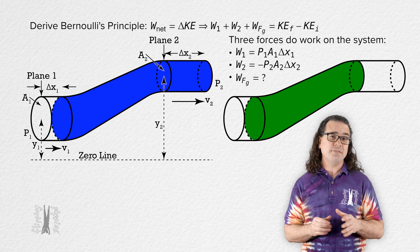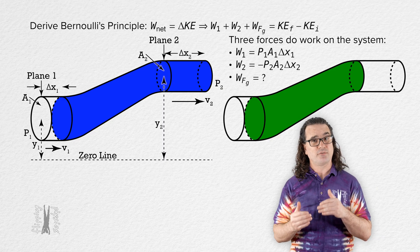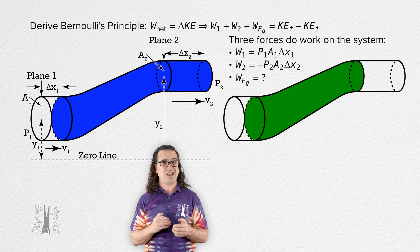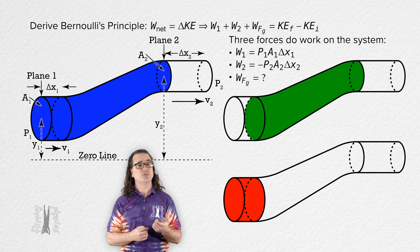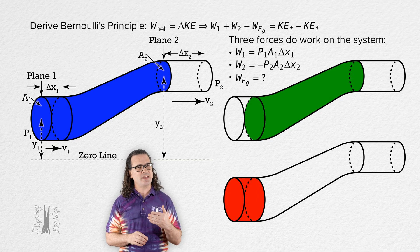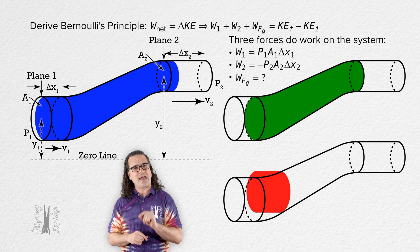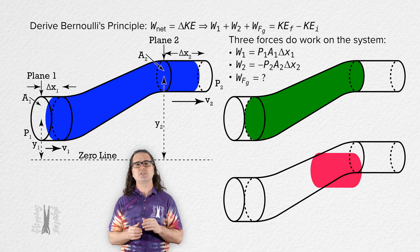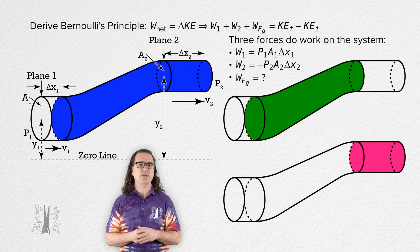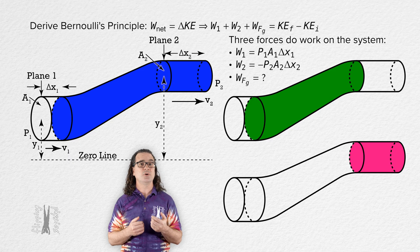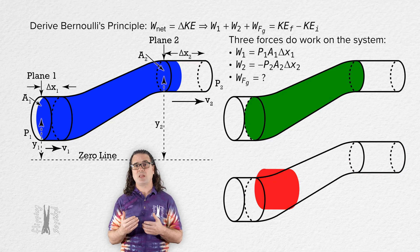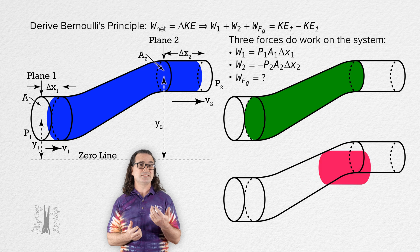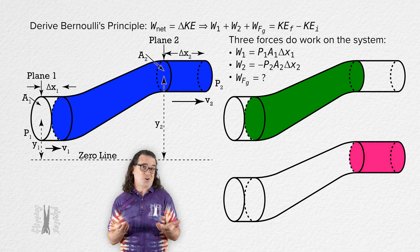The only volume of fluid which changes vertical height above the horizontal zero line is the red cylinder of fluid which passes through plane one during time delta t. Essentially, what happens here is that that red cylinder of fluid is moved to become the pink cylinder of fluid which passes through plane two during time delta t. As far as changes in vertical height above the horizontal zero line, that is all that changes.